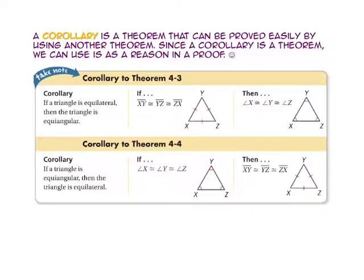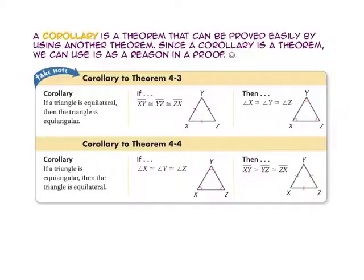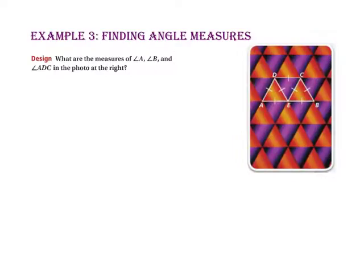A corollary is a theorem that can be proved easily by using another theorem, and since it is a theorem, we can use it as a reason in a proof. The corollary to Theorem 4-3 states: if a triangle is equilateral, then it is equiangular — meaning if three sides are congruent, the three angles are also congruent. The corollary to Theorem 4-4 states: if a triangle is equiangular, then it is equilateral — meaning if three angles are congruent, the three sides are also congruent.